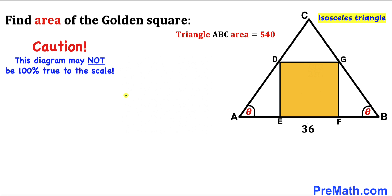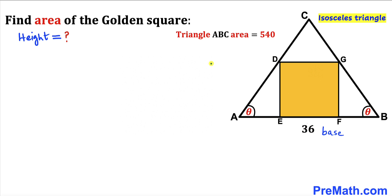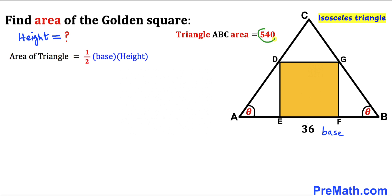Please keep in mind that this figure may not be 100% true to scale. In our first step, since we have been given the area of triangle ABC as 540 and the base is 36 units, we are interested in calculating the height of triangle ABC. Recall the area of a triangle formula: area equals one-half times base times height. In our case, area is 540 and base is 36.